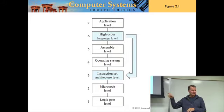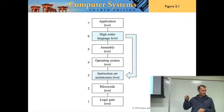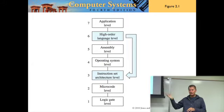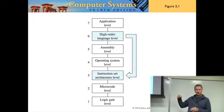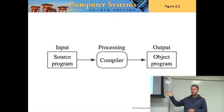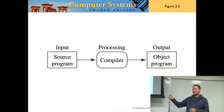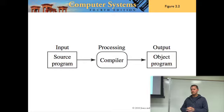What does every program do? It takes input, processes it, and sends it to the output. What is a compiler — is it software or hardware? It is software, it is a program. So the compiler takes your C++ source code as its input and processes it. It's a program that takes another program as input, treating your source program as data.